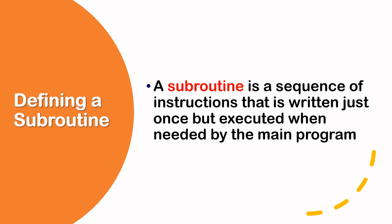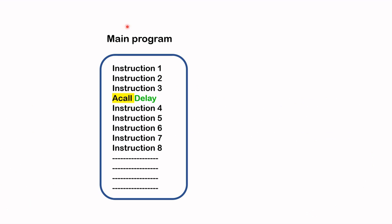Let's start off by defining what a subroutine is. A subroutine is a sequence of instructions that is written just once but executed when needed by the main program. Looking at this illustration, imagine this is my main program — there are several instructions, and in between I have a 'call delay' which will invoke the delay subroutine.